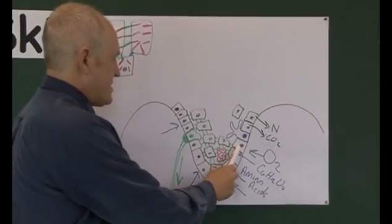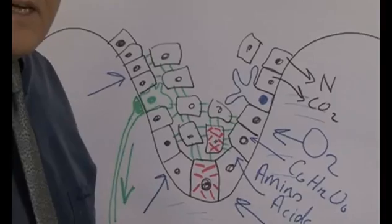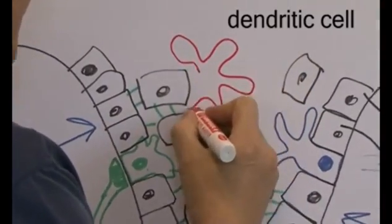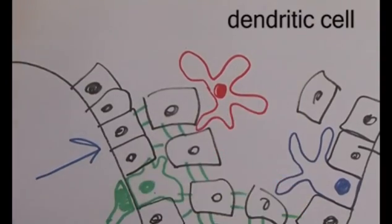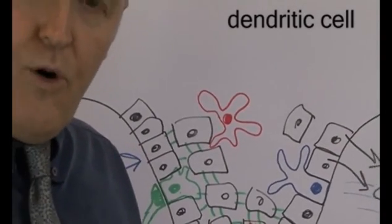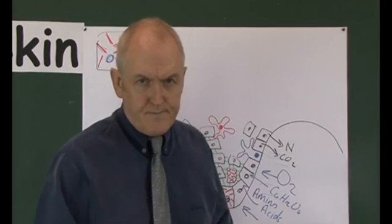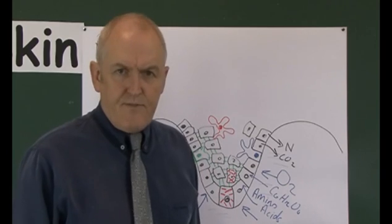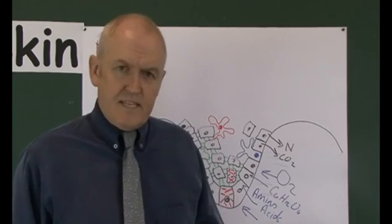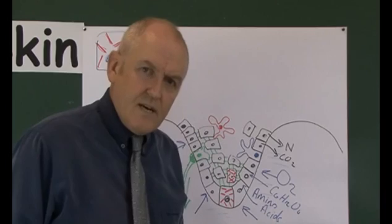There's a fourth type of cell in the epidermis — it's an immune cell called a dendritic cell. It has long arms — dendrites — that spread out. These dendritic cells are actually a specialized form of monocyte. In the blood you have monocytes, and monocytes can migrate into the tissues where they can either differentiate into a large phagocytic cell called a macrophage, or alternatively, given particular sets of signals, the monocyte can differentiate into a dendritic cell.